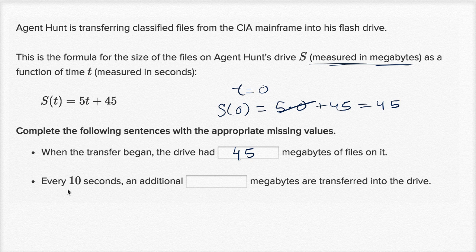Then they say every 10 seconds, an additional blank megabytes are transferred into the drive. So every 10 seconds, how many? Well, one way to think about it, there's a bunch of ways you could think about this. We know that there were 45 megabytes at time equals zero. Well let's think about what happens 10 seconds later.